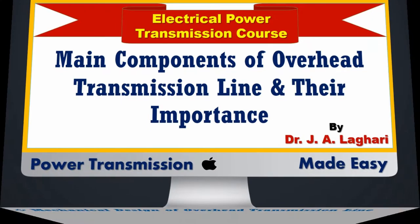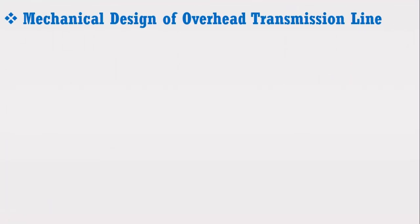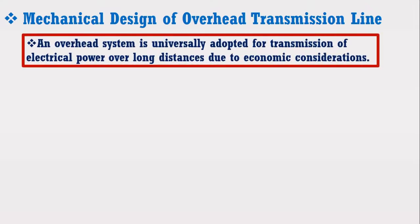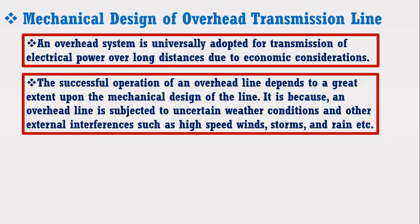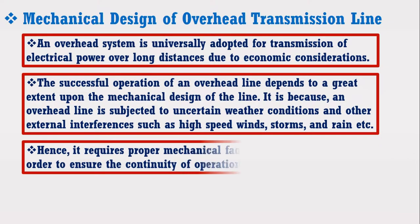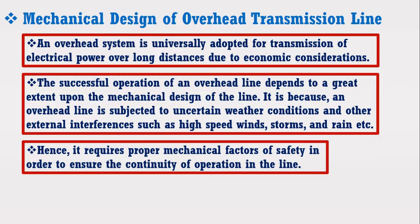This topic belongs to mechanical design of overhead transmission line. In the previous lectures, we have discussed that an overhead system is universally adapted for the transmission of electrical power over long distances due to economical consideration. Now the successful operation of an overhead transmission line depends to a great extent upon the mechanical design of the line. It is because an overhead line is subjected to uncertain weather conditions and other external interferences such as high-speed winds, storms, rain, etc. Hence, it requires proper mechanical factor of safety in order to ensure the continuity of the operation in the line.